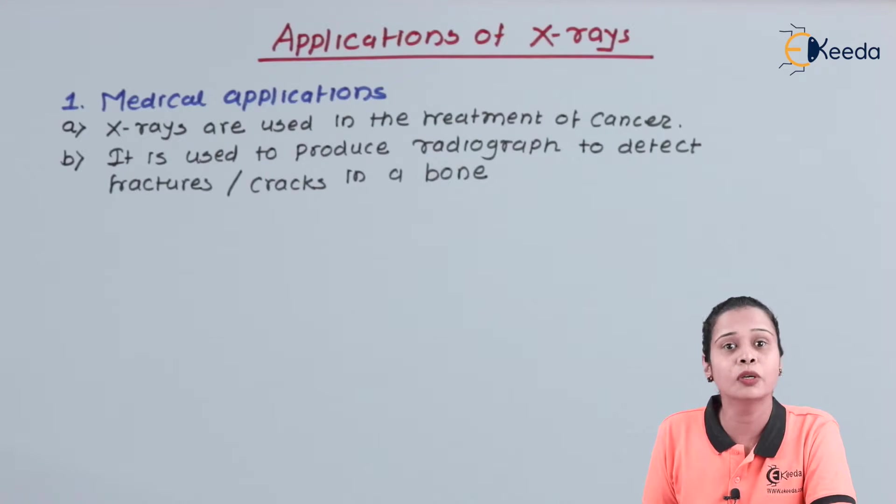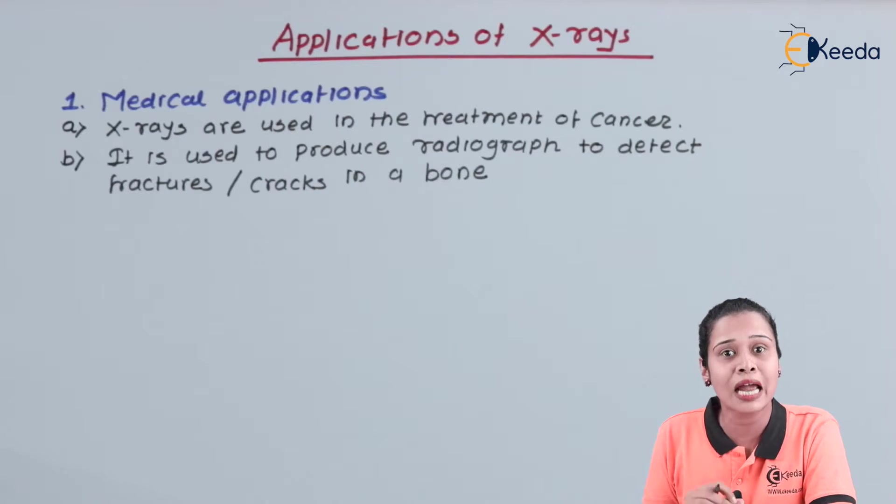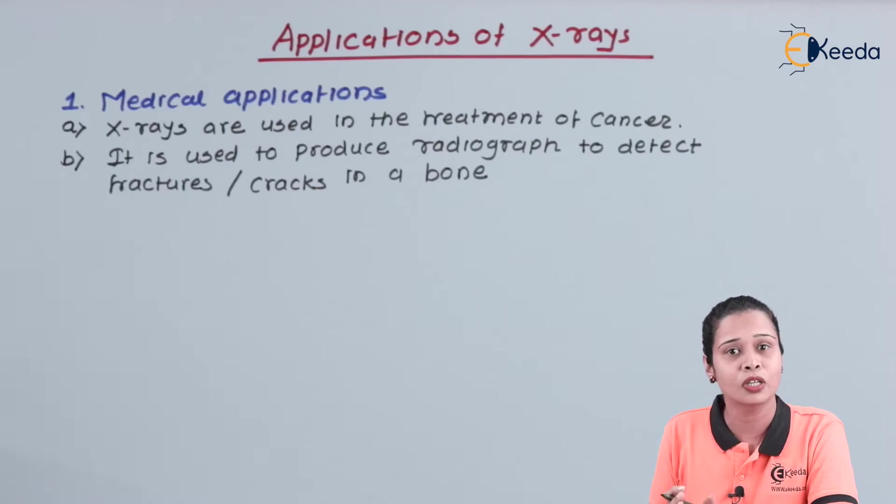Actually, X-ray has very good penetration power, but it can pass through phosphorus but it cannot pass through calcium. Our muscles are made up of phosphorus, so it can pass through our muscles, and our bones are made up of calcium, so it cannot pass through the calcium. It gives the shadow of the bone, that is shadow of that calcium bone on the radiograph. So in this way, we can detect whether there are cracks or fracture in the bone.